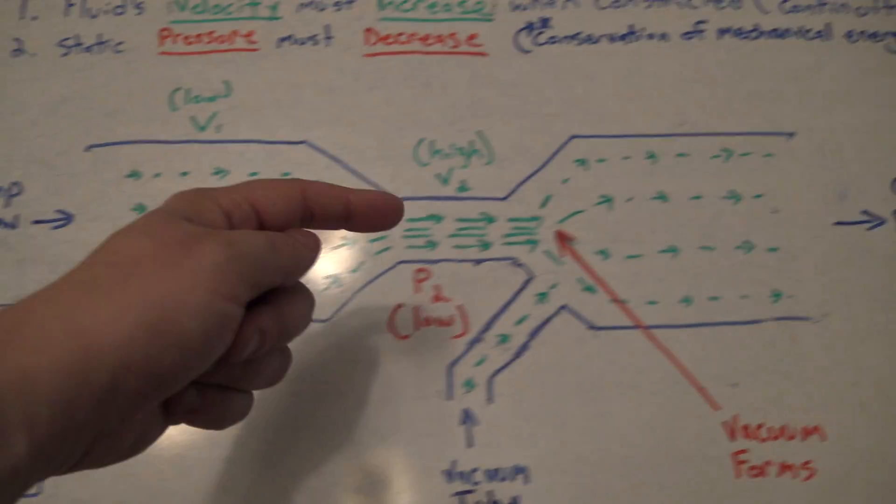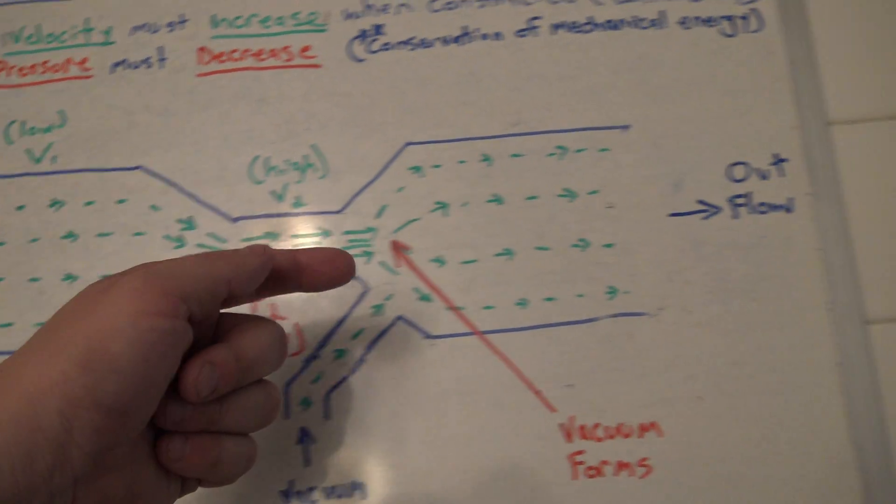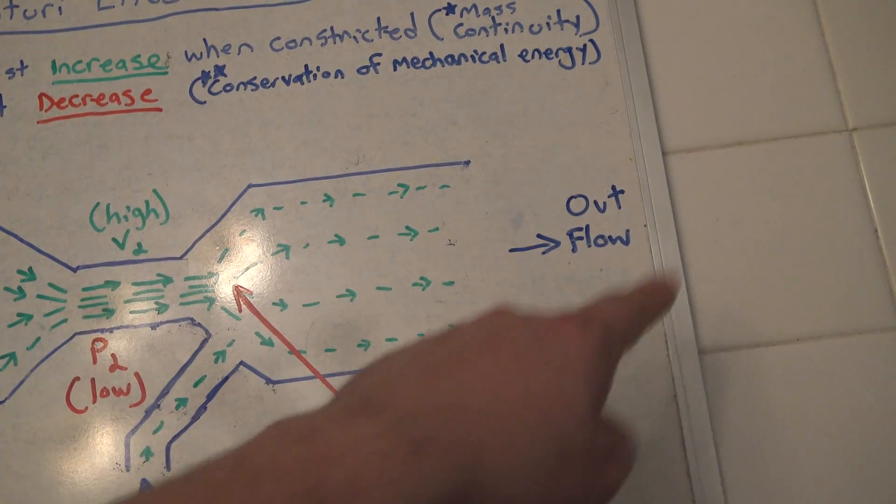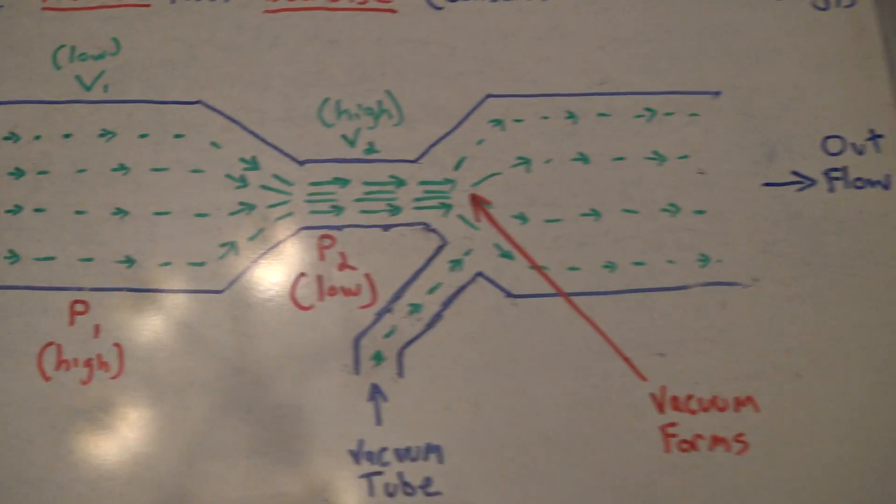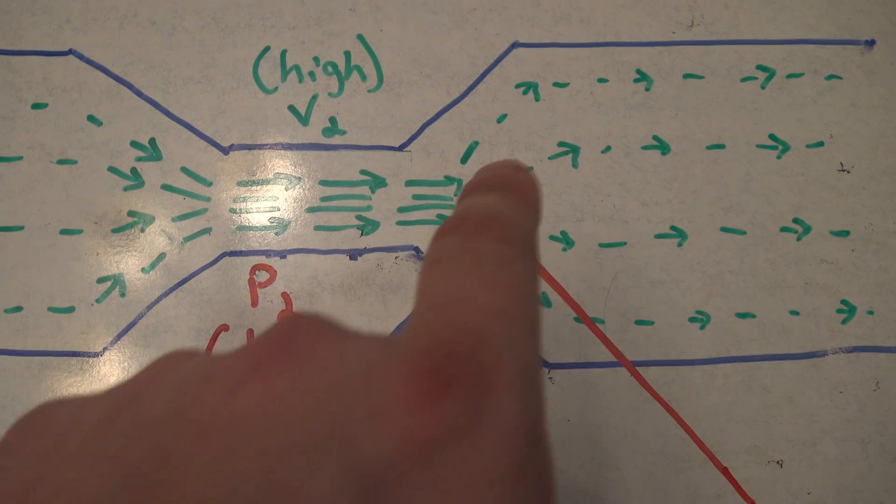So the pump pumps water, it gets constricted, and then it exits this side into whatever your outflow situation is. And in the process, a vacuum is formed, and it's formed right here, and that's the important part.